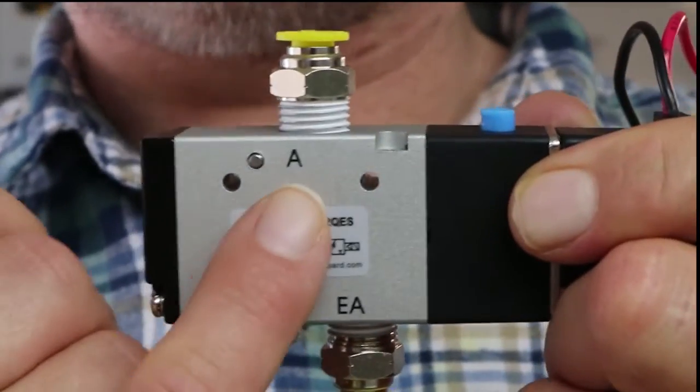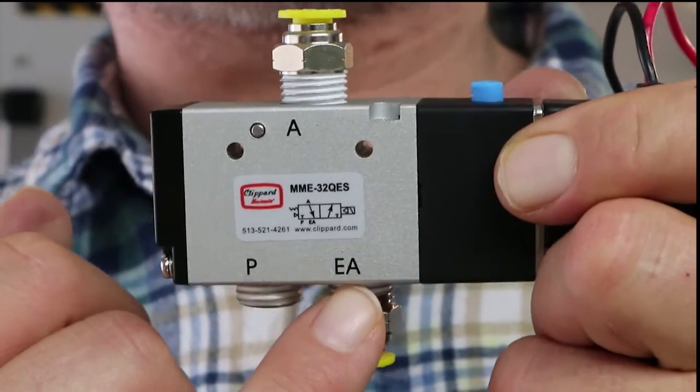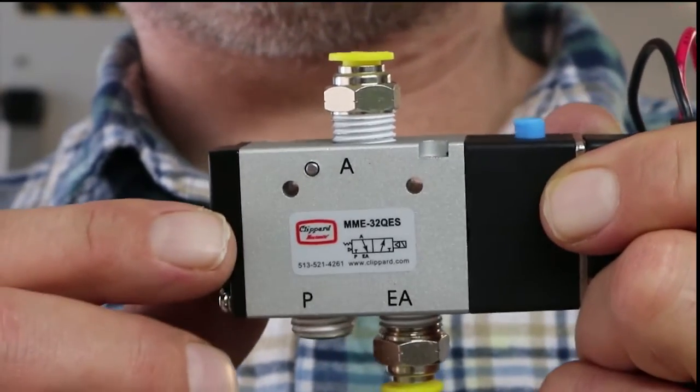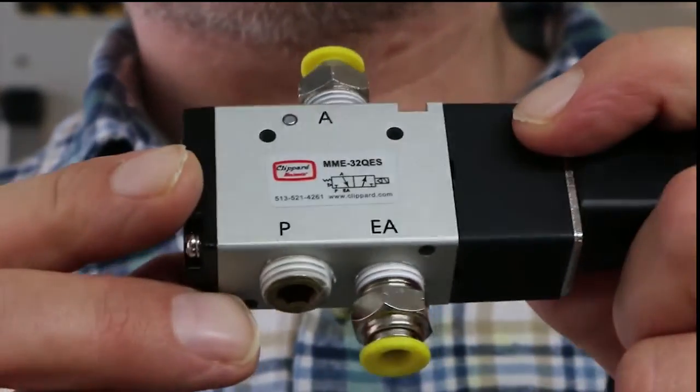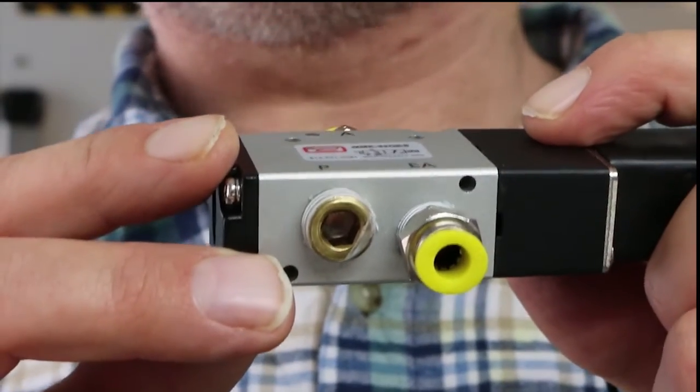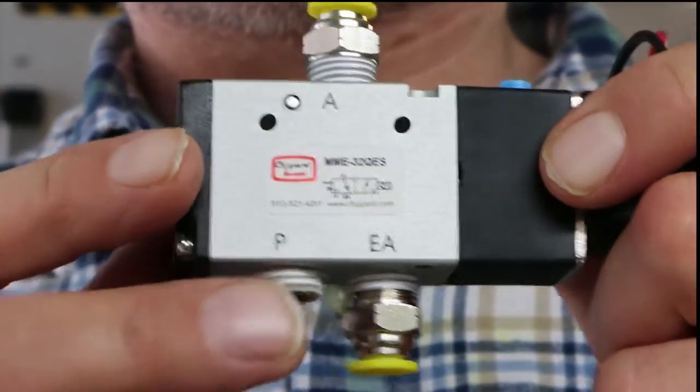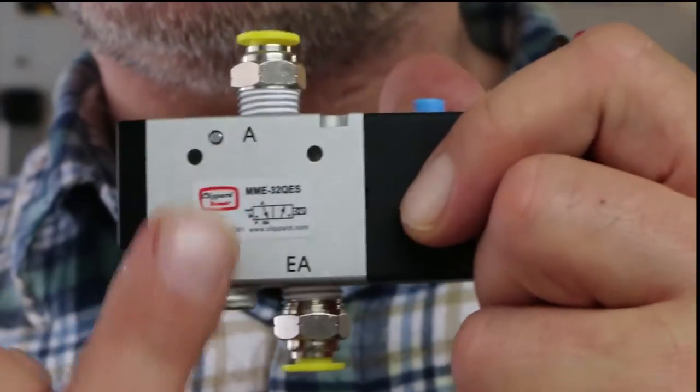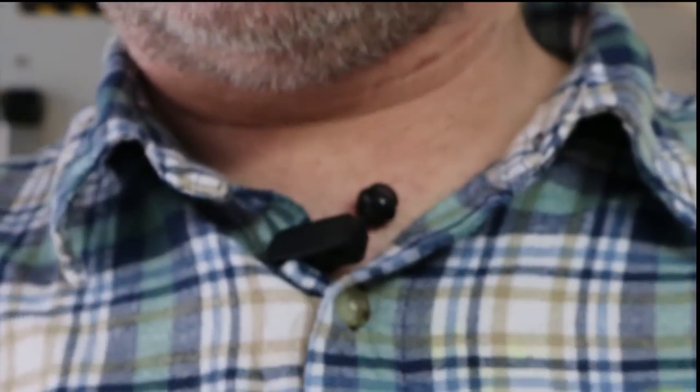We've got three ports on the valve. There's the pressure port, and there's the output port, port A, and down here is the exhaust port. So A exhaust, which makes sense. Now, look how I got hooked up. What did I do? I put a plug in the port where you usually put pressure into. Aren't you supposed to put pressure in there? So, no. Look, I'll show you the plug. This is a plug here.